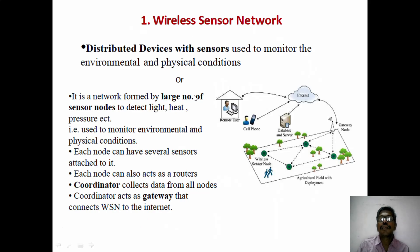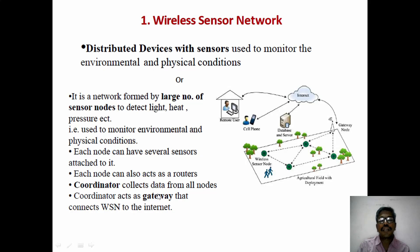The first one is wireless sensor network. This wireless sensor network is used to connect sensors which are located in different places wirelessly. It will be connected as nodes — a group of sensors are called nodes. Each node will be connected through a wireless communication network, and the data from all the nodes are collected by the coordinator through the gateway.